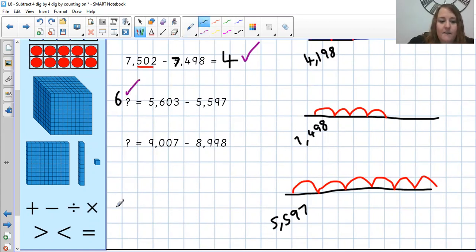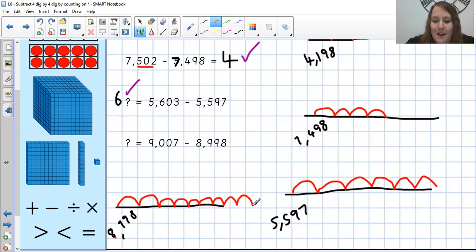Last but not least then, our final number line I'm needing to draw. We've got something is equal to 9,007 take away 8,998. So I'm going to start with my 8,998 on this side. And I am counting up until I get to 9,007. I'm just going to say the smaller numbers because we know we'll jump up in just a second anyway. So we've got 8,998, 8,999, 9,000, 9,001, 9,002, 9,003, 9,004, 9,005, 9,006, and 9,007.